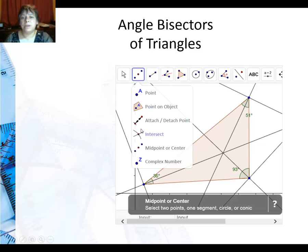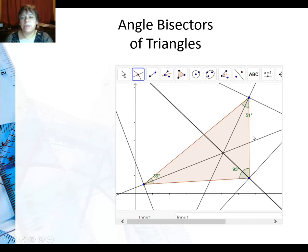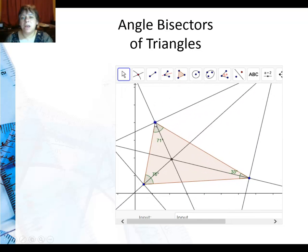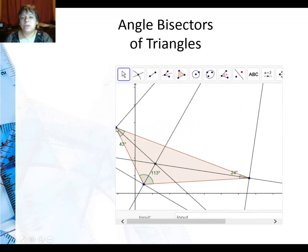So where they intersect, I'll go ahead and click on this line and this line, that point right there is where all three angle bisectors intersect. And you can see that it's always inside of the triangle.